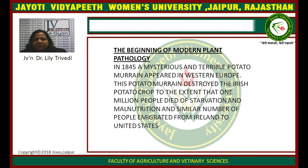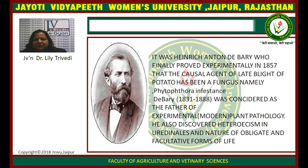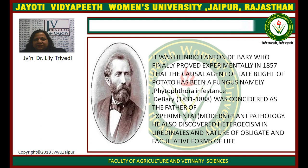The beginning of modern plant pathology. In 1845, a mysterious and terrible potato murrain appeared in Western Europe. This potato murrain destroyed the Irish potato crop to the extent that one million people died of starvation and malnutrition, and a similar number of people immigrated from Ireland to the United States. It was Heinrich Anton de Bary who finally proved experimentally in 1857 that the causal agent of late blight of potato was a fungus, namely Phytophthora infestans. Anton de Bary, from 1831 to 1888, was considered the father of experimental or modern plant pathology. He also discovered heteroecism in Uredinales and the nature of obligate and facultative forms of life.